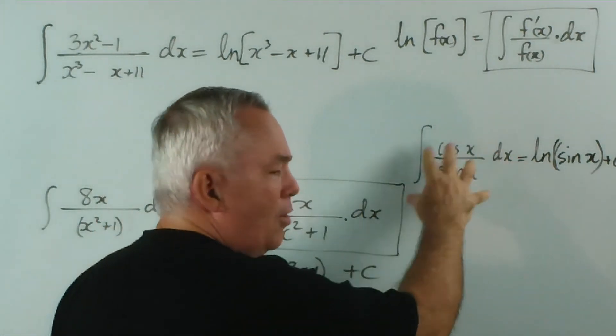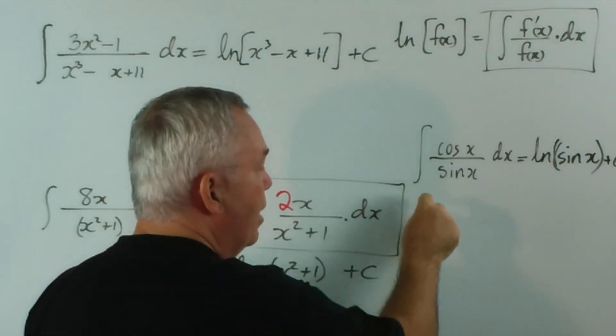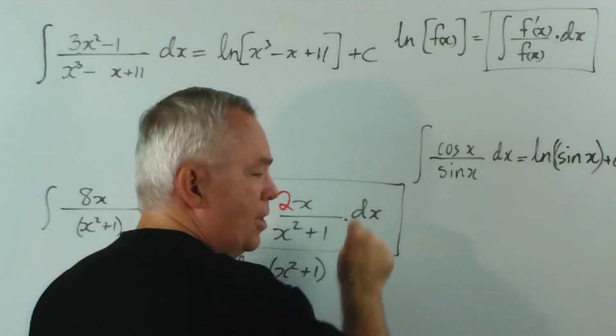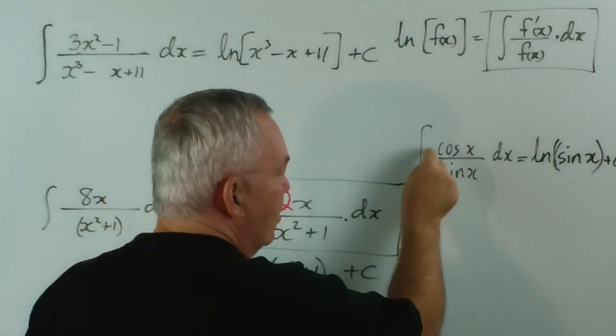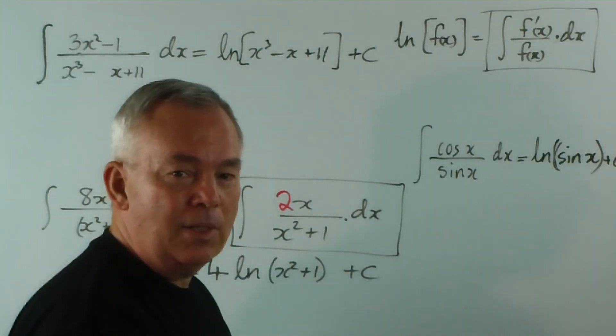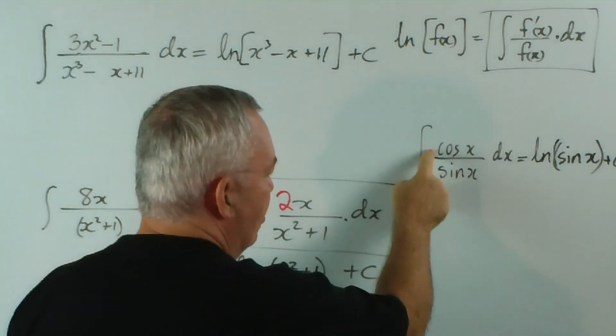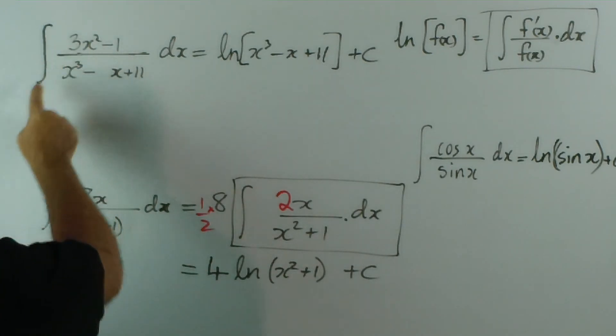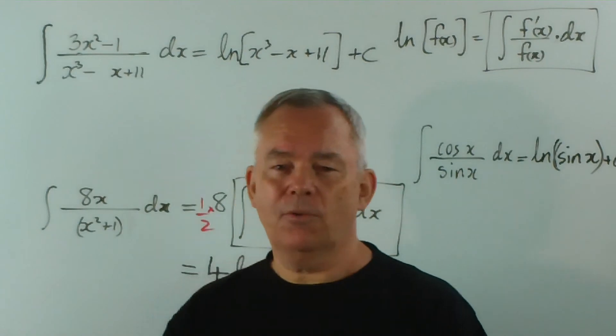So we get these odd expressions sometimes, even with trigonometric functions. The thing to recognize is if you have a fraction, the first thing you should look for, or one of the things you should look for, is to see whether the top is the exact derivative of the bottom, or whether it only differs by a constant. And in each case, that's the derivative of that, that's close to the derivative of that, and that's the derivative of that. That's the pattern we look for when we're producing logarithmic functions.